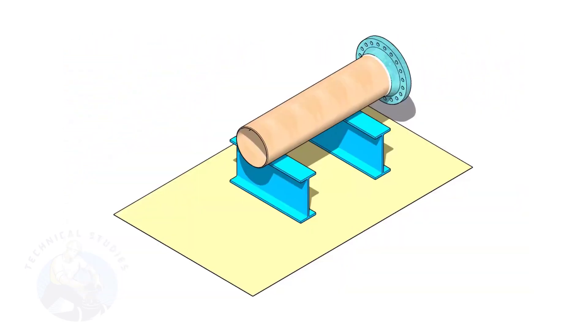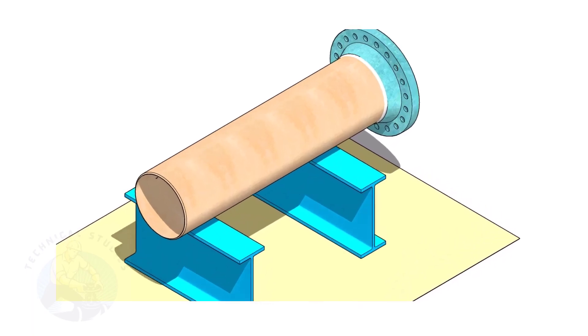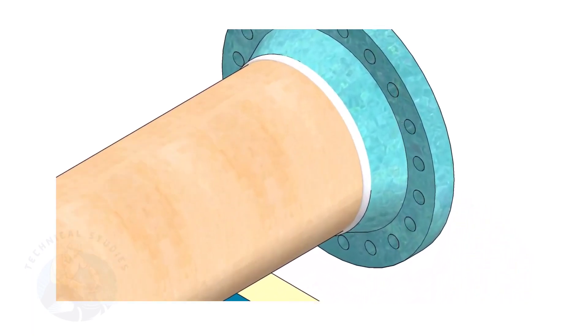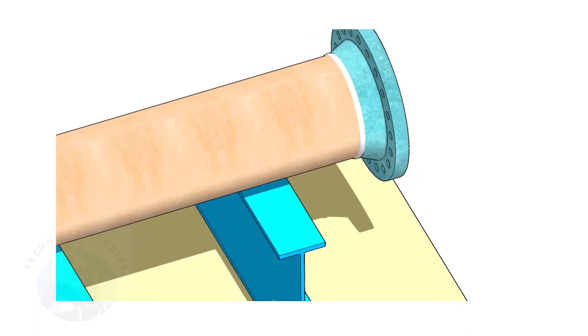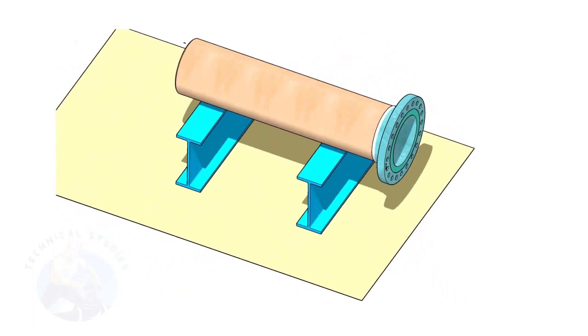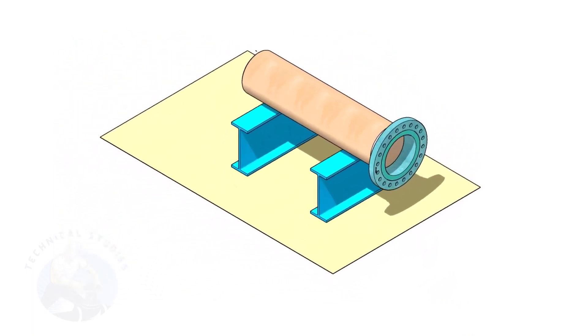Assume that the flange is welded to the pipe. Put the spool on suitable supports. Correct the plumbness of the flange.